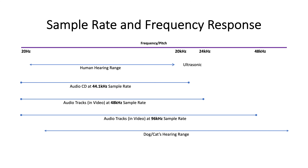Any sound higher than our hearing range is called ultrasound or ultrasonic. Notice that the relationship between the sample rate and the range of frequency response is actually half or double of the number. So if for any reason you want to capture an extremely high frequency up to 48,000 hertz, you would need to set your sample rate at 96 kilohertz — the rate is double of 48. But again, we're talking about extremely high frequencies that we cannot even hear, though dogs and cats may be able to tell us the difference.